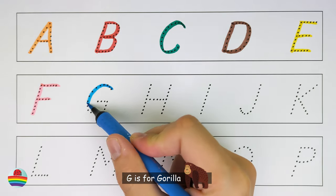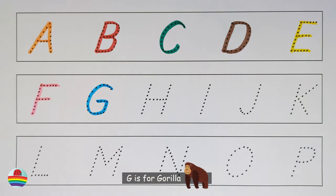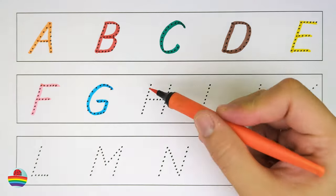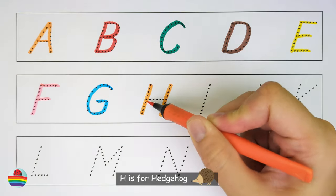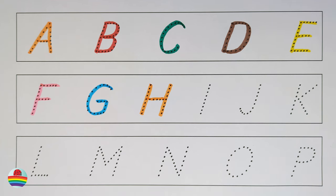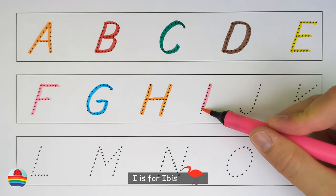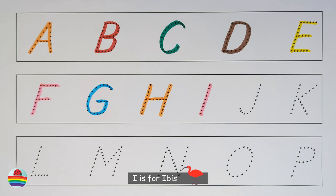G. G is for gorilla. H. H is for hedgehog. I. I is for ibis.